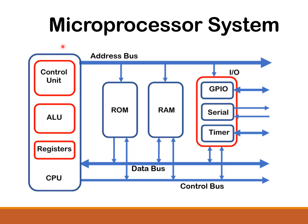Here is a block diagram of a microprocessor system. At the heart of the microprocessor system is the central processor unit or CPU. The CPU consists of the control unit, ALU or arithmetic logic unit, and registers.